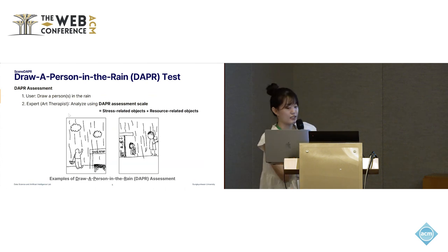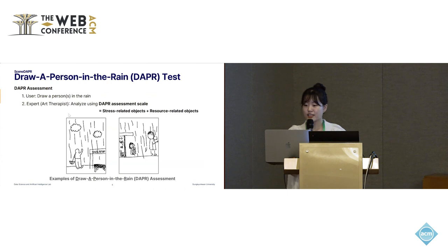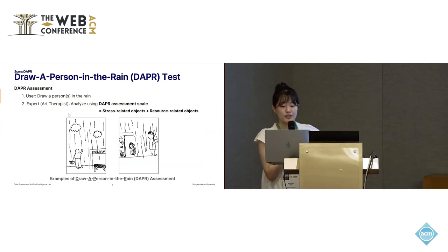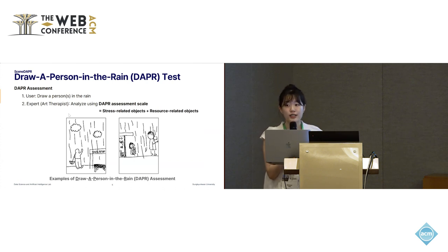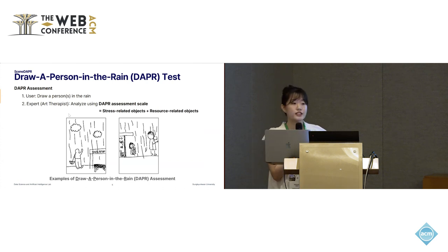Among the various psychological drawing assessments, we focused on the Draw a Person in the Rain test, called the DAPR assessment. During the assessment, participants are asked to draw a person in the rain, and these sketches are then analyzed by a human expert such as an art therapist. In the DAPR assessment scale, stress-related objects like rain and cloud indicate the perceived level of stress, and resource-related objects like an umbrella symbolize coping abilities against stress. As a result, we can evaluate how individuals cope with stress through this assessment.